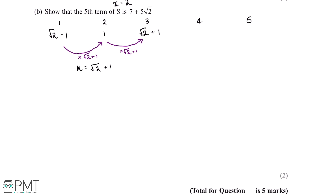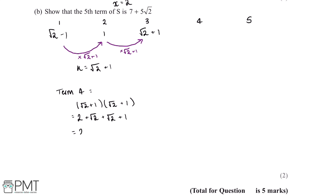To get from term 3 to term 4 we multiply √2 + 1 by √2 + 1. So term 4 = (√2 + 1)². Expanding: √2 × √2 = 2, √2 × 1 = √2, 1 × √2 = √2, and 1 × 1 = 1. Simplifying gives 2√2 + 3, and this is our fourth term.